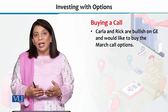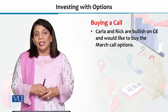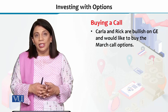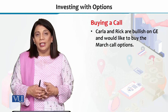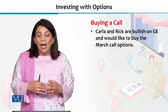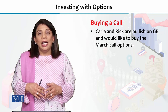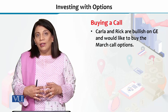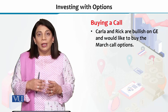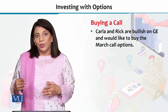Now we are going to discuss this example. We assume that there are these two people, Carla and Rick, who are bullish on GE. Therefore, they are interested in buying the March call option.